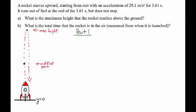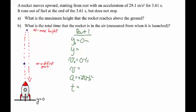The first part is when it's burning fuel and has an upward acceleration of 29.1 meters per second squared. We're going to set up our table of data for the kinematic equations with the starting and ending positions, the starting and ending velocities, the acceleration, and the time. The rocket is starting at the ground, so the initial height is zero. We're told that it starts from rest, so the initial velocity is zero. It has an upward acceleration of 29.1 meters per second squared for 3.61 seconds. We need to calculate the position and the velocity at 3.61 seconds.